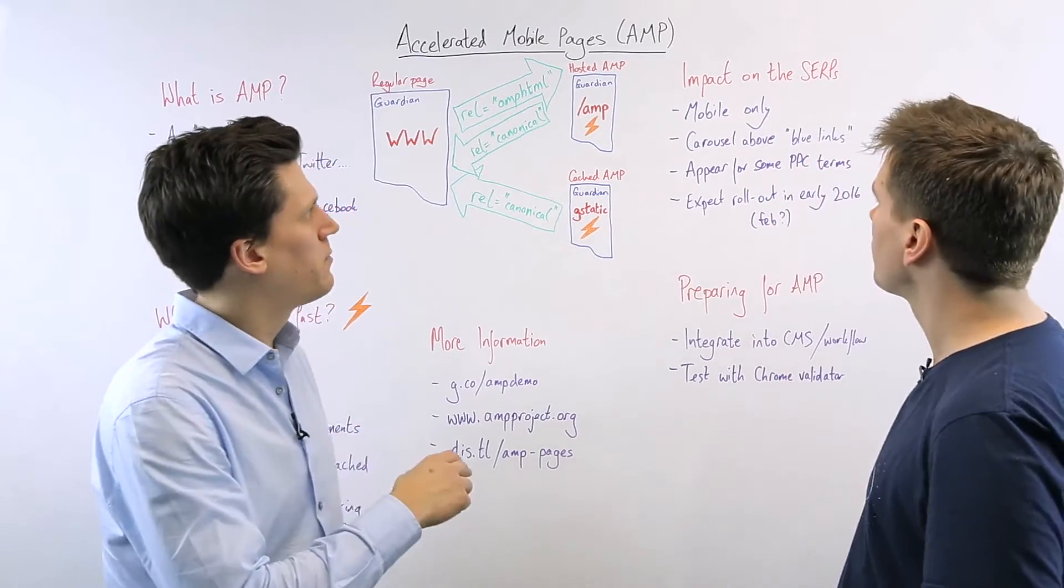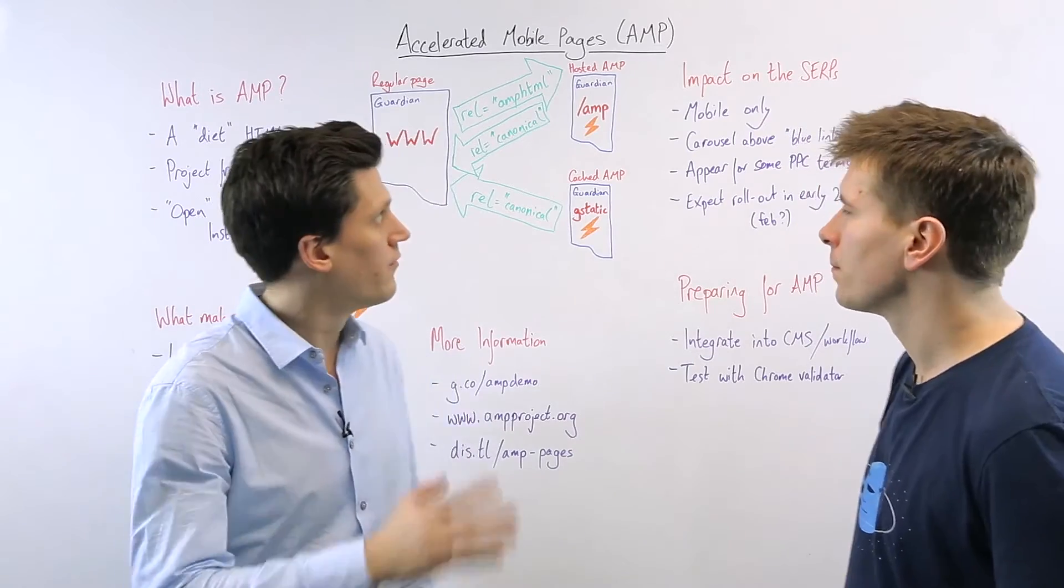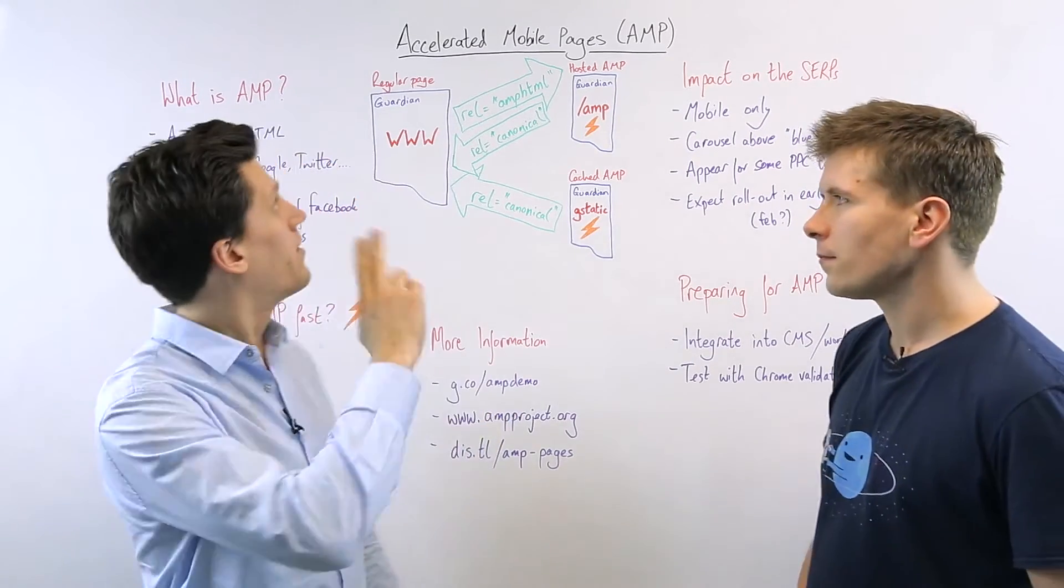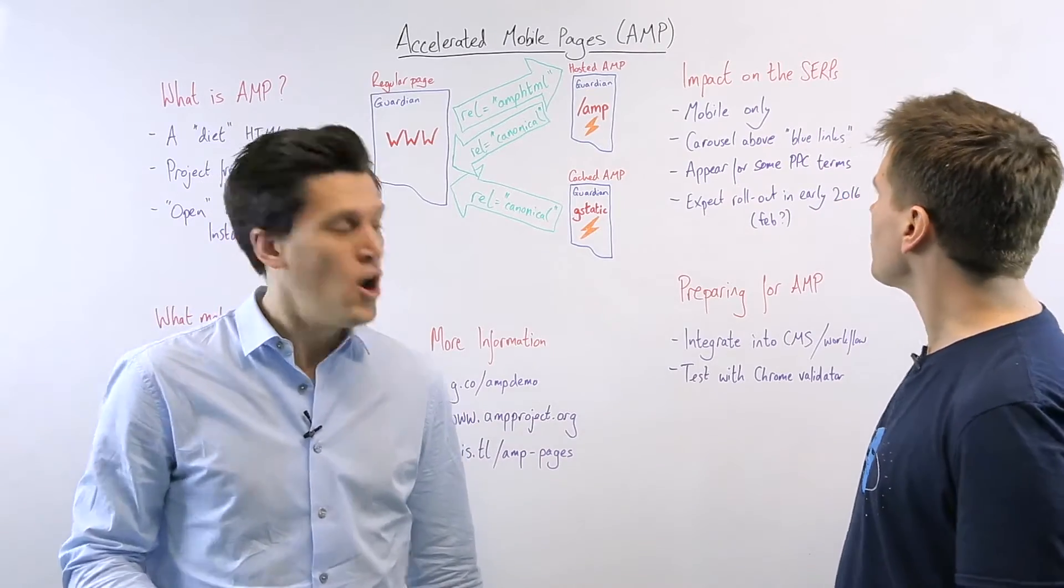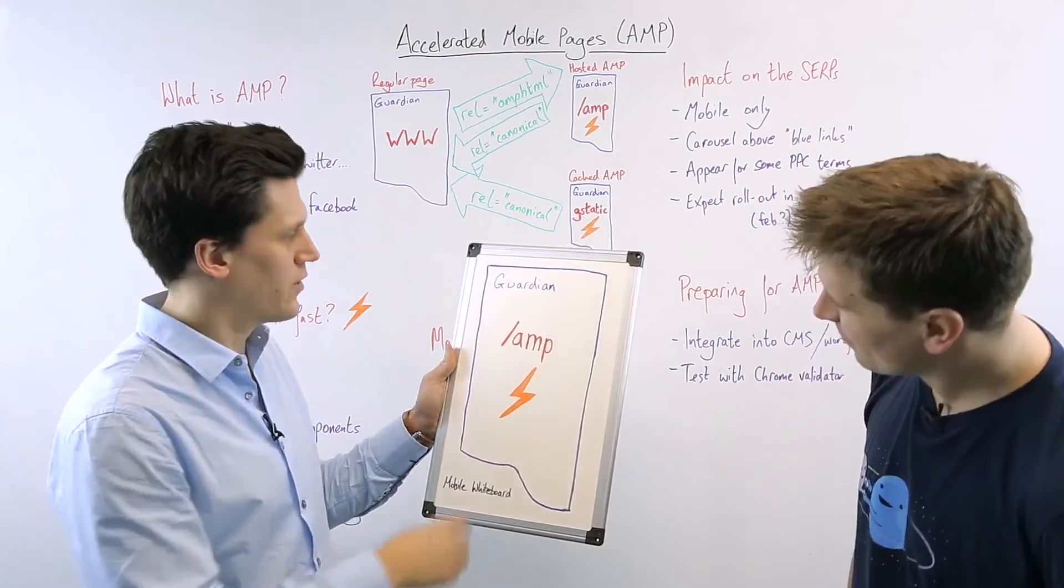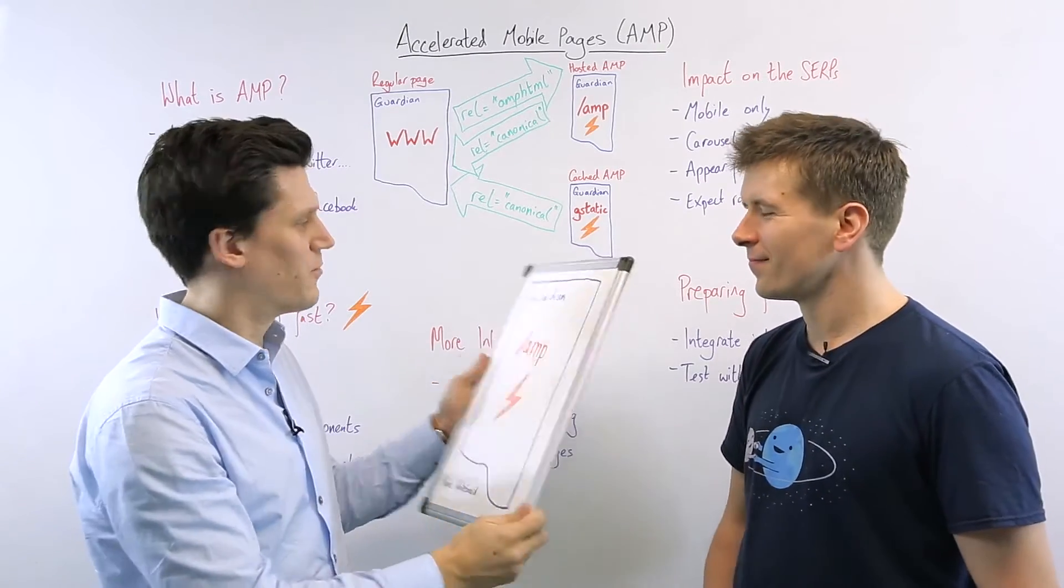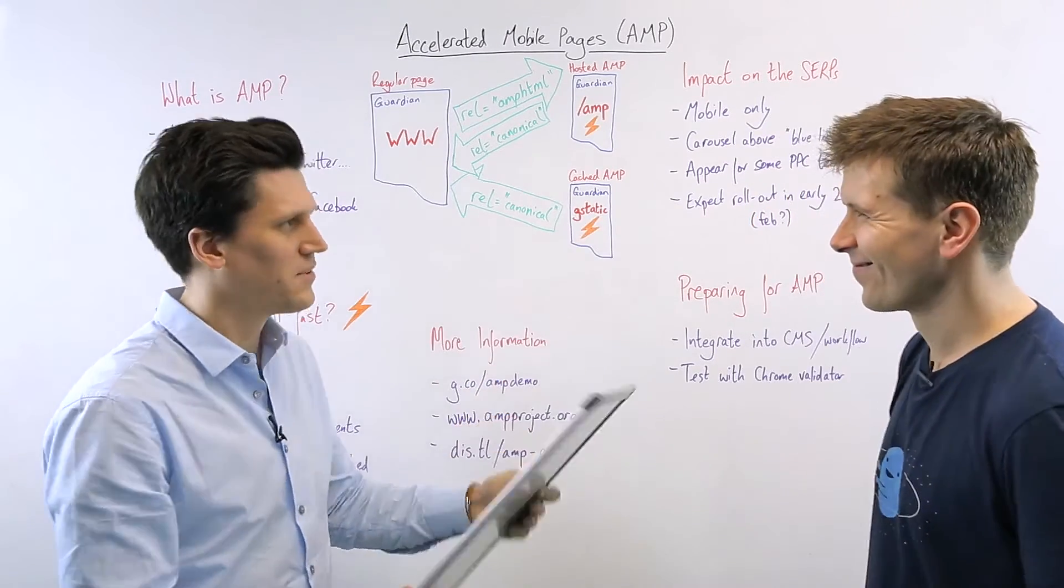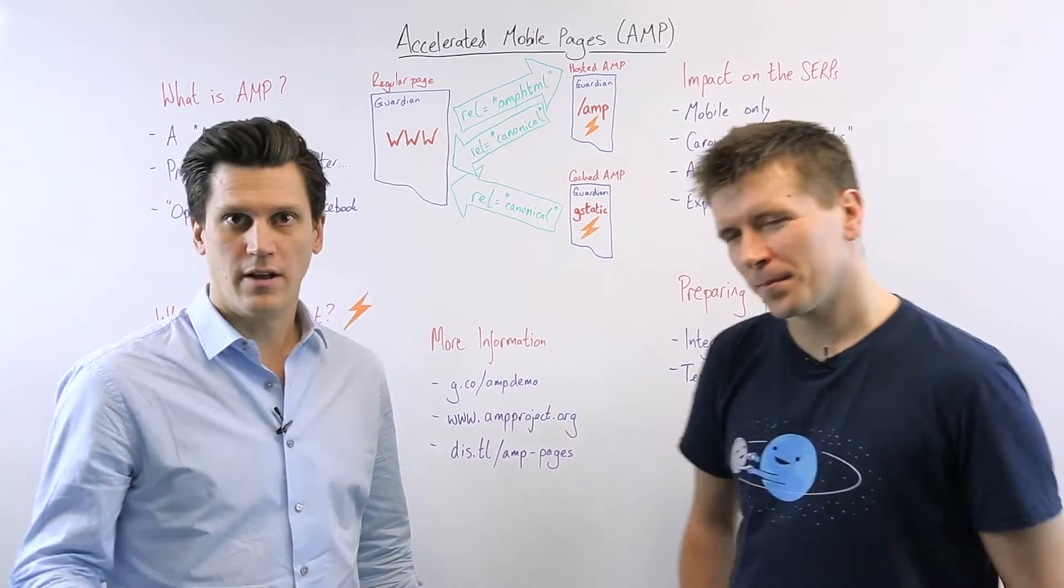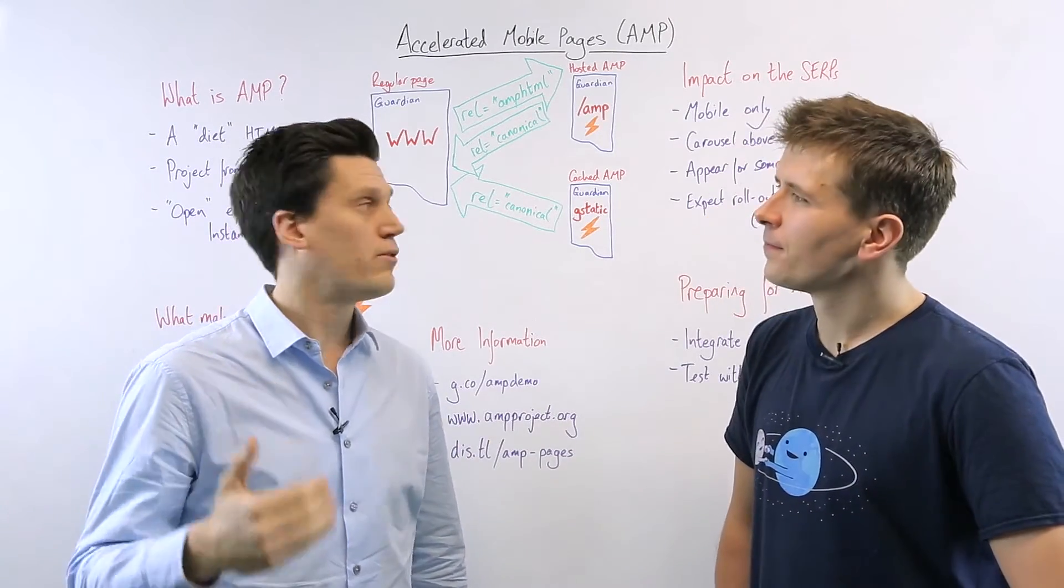So let's talk a little bit about how this might actually show up in search results. So first of all, what we know at the moment is it's looking like it's mobile only. It's right there in the name, Accelerated Mobile Pages, which is why I brought along my mobile whiteboard to demonstrate this for you. This is the AMP version showing up on a mobile device, tablet, phablet, not quite sure. But so right now, it's mobile, it's talking about being mobile, it's not even rolled out just yet.